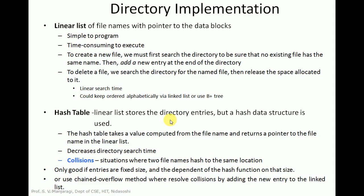A new node will be created in the linked list which is added at the end of the linked list. Similarly to delete a file, again we need to search the directory for the specified file name. If the file exists then the memory space allocated to that file needs to be freed, or the node created for that file must be deleted. There is some difficulty with the linear list implementation — it adds a linear search time. The time required to search a file in the linear list is linear.